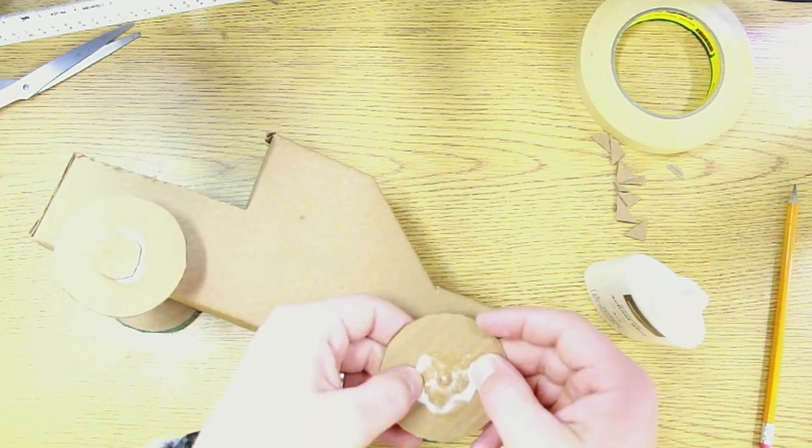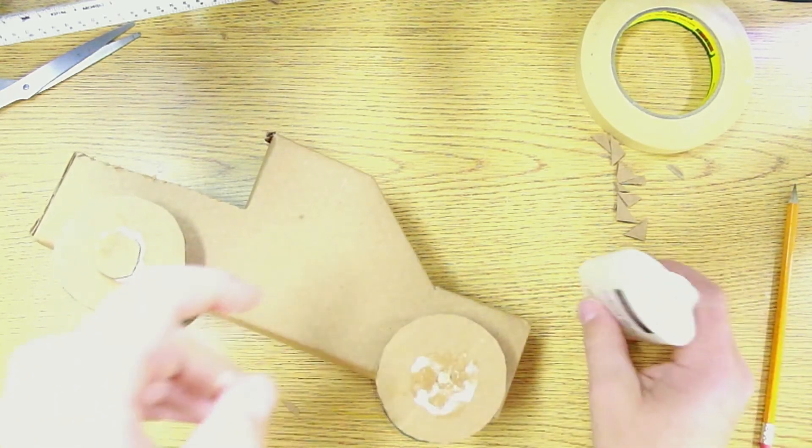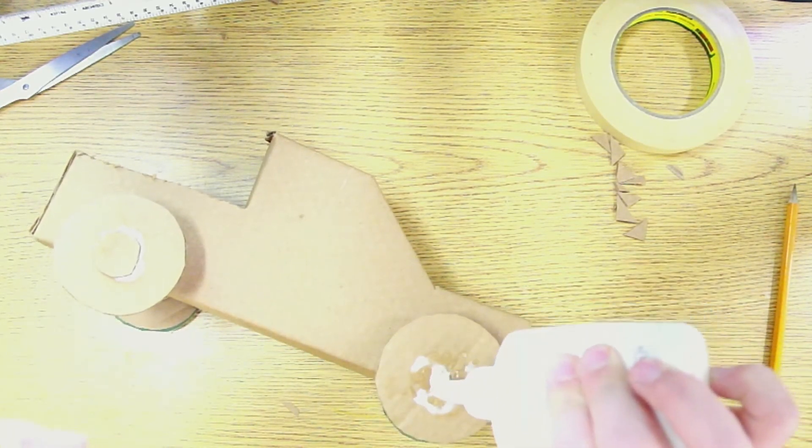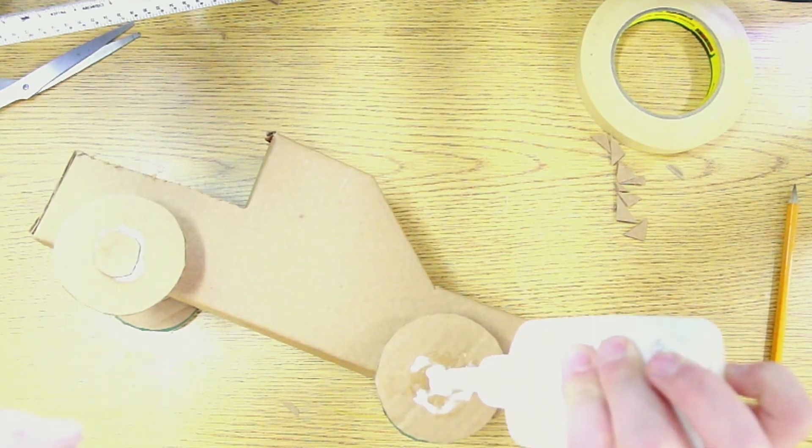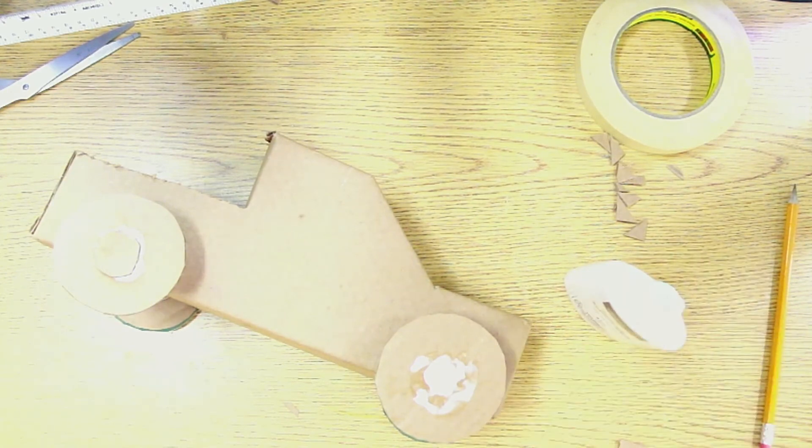And on top of the wheel, once I get it set here, is going to go one last piece of cardboard. Kind of like a cap, which is going to hang on to the dowel rod even more and stiffen up that wheel just a hair more.